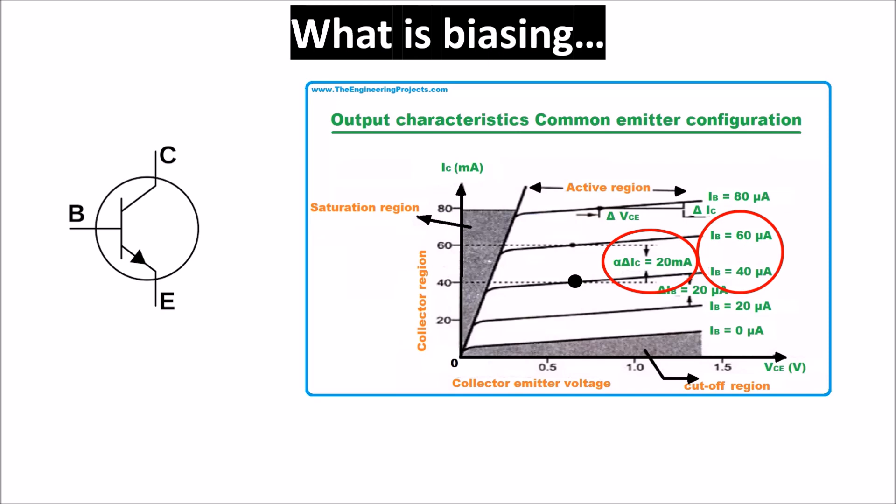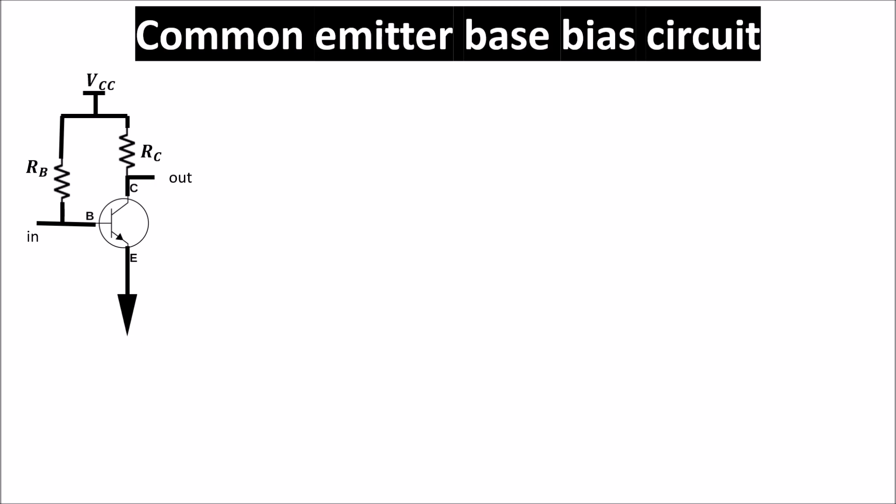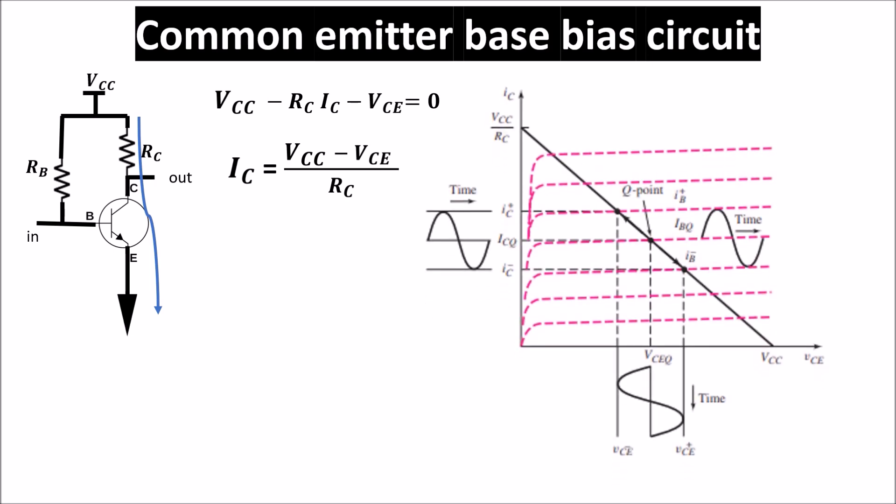Of course, this quiescent point has to be as stable as possible, so it doesn't have to change too much during the working. The first biasing circuit we see is called base bias or fixed bias. We can write the Kirchhoff voltage law applied around the collector circuit, getting this equation, from which we get the DC load line with collector current related to VCE. And we can put this line in the IV diagram of the transistor.